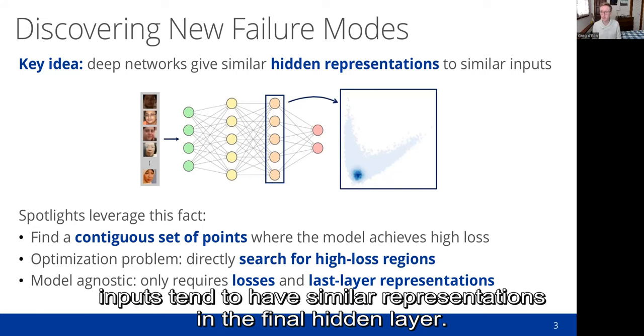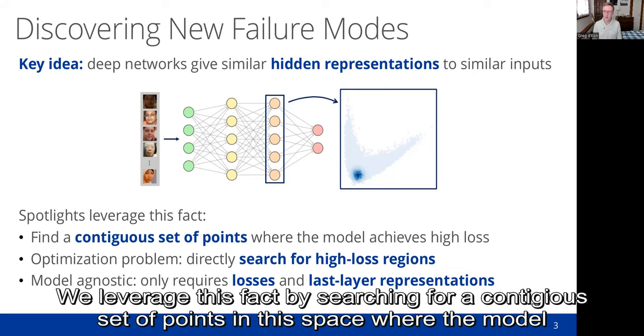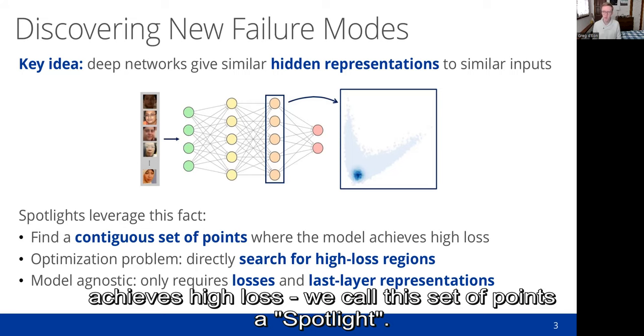We leverage this fact by searching for a contiguous set of points in this space where the model achieves high loss, and we call this set of points a spotlight.